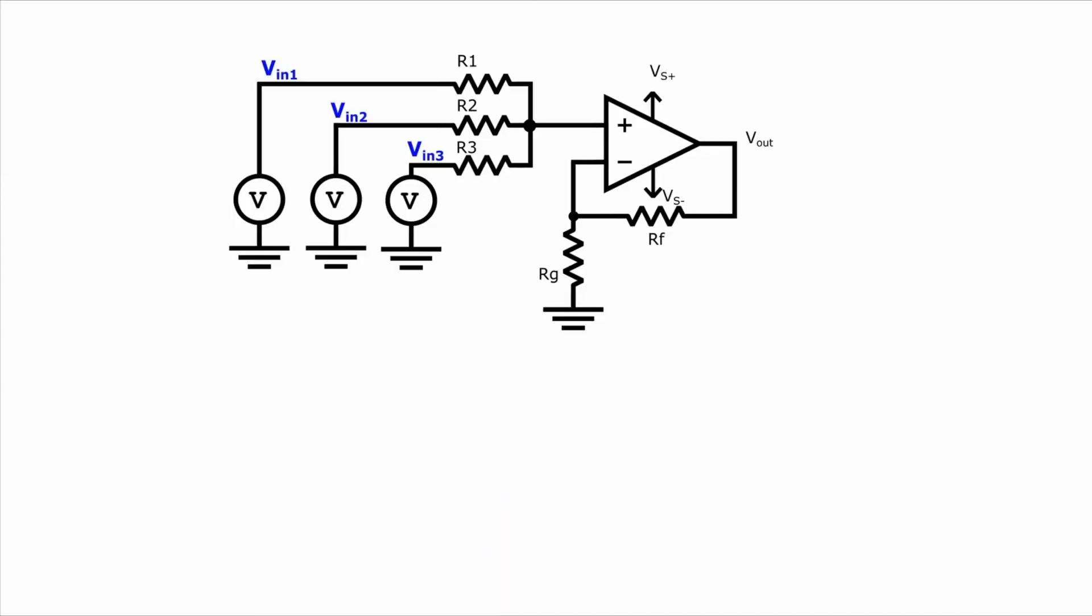Let's first take a look at the non-inverting summing amplifier and figure out the relationship between Vout, the three Vins, R1, R2, R3, Rf, and Rg.